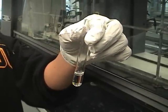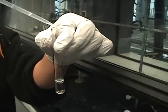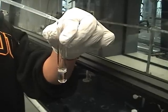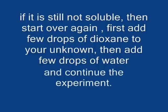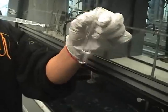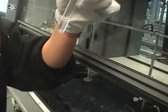Add one drop of 1,4-dioxane at a time and swirl until your unknown dissolves. It's important to go slowly and mix well to avoid using too much dioxane. If you need more than a few drops of dioxane, it's best to start over and dissolve your unknown in a minimum amount of dioxane and then add aqueous base.